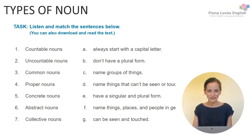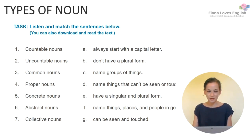So how did you do? Number 1: Countable nouns matches E — they have a singular and plural form. Number 2: Uncountable nouns matches B — they don't have a plural form. Number 3: Common nouns matches F — they name things, places and people in general.